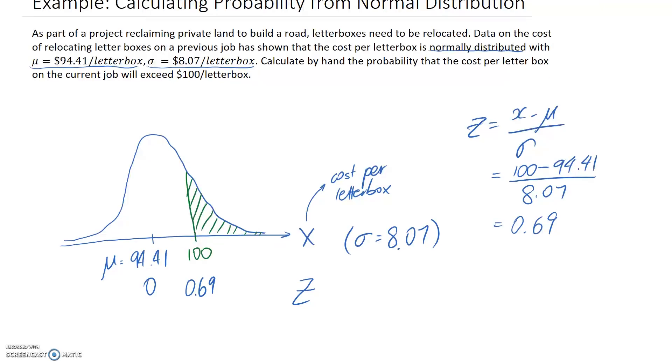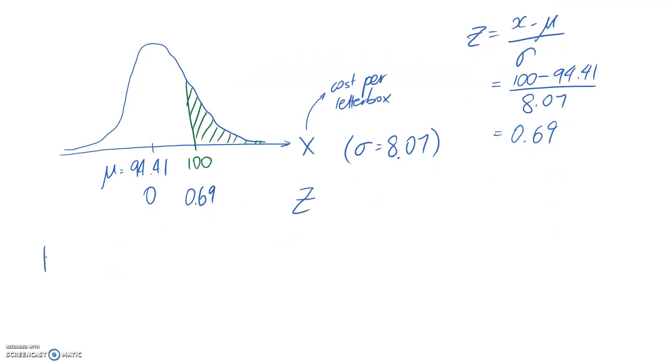We were interested in the probability that x is greater than 100, which we can equivalently write now as the probability of z being greater than 0.69, because this is now the standard normal distribution.